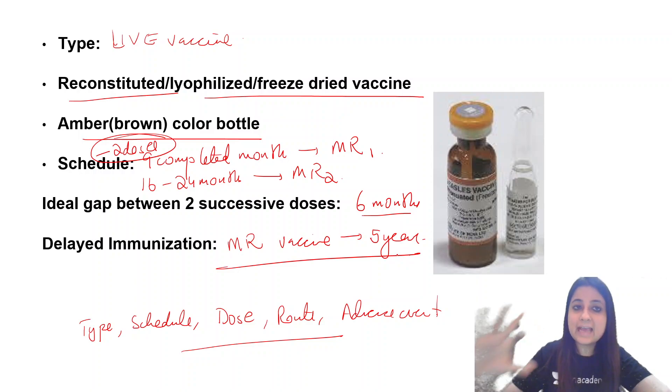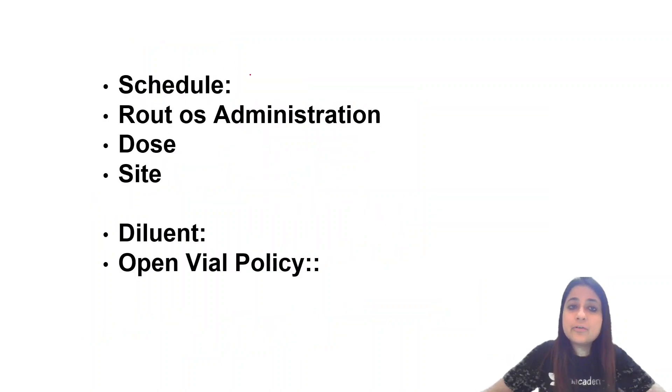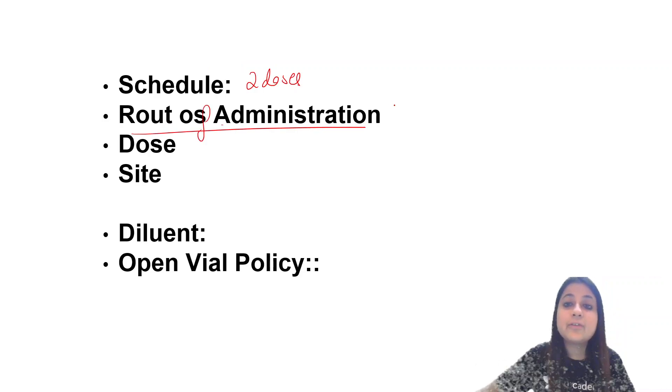What is the route of administration? At nine completed months, you give two vaccines: Measles-Rubella and Japanese Encephalitis. Both have the same route of administration, which is subcutaneous.